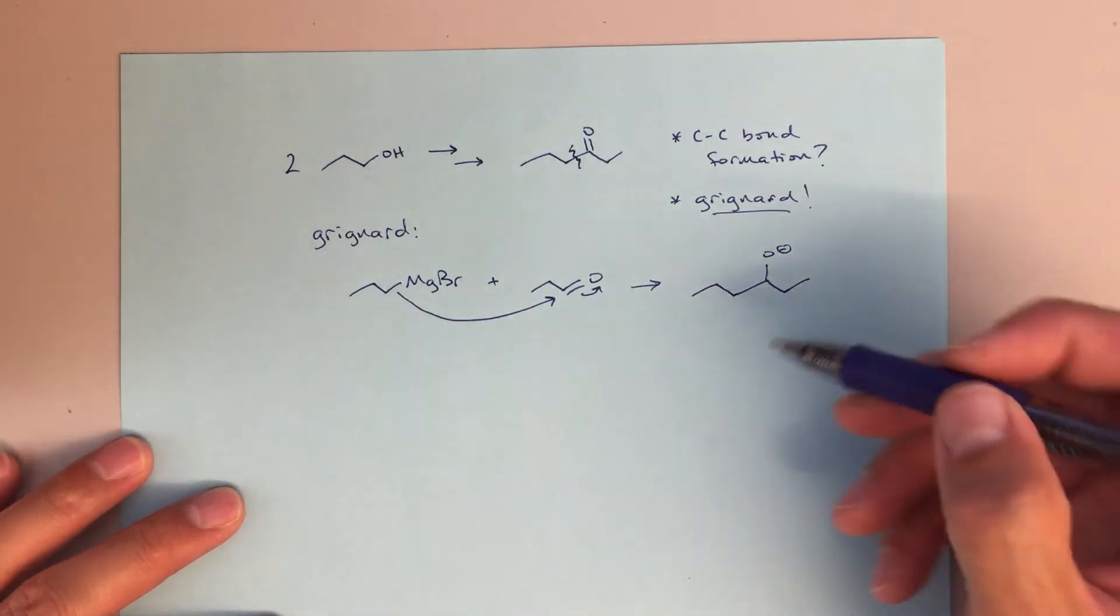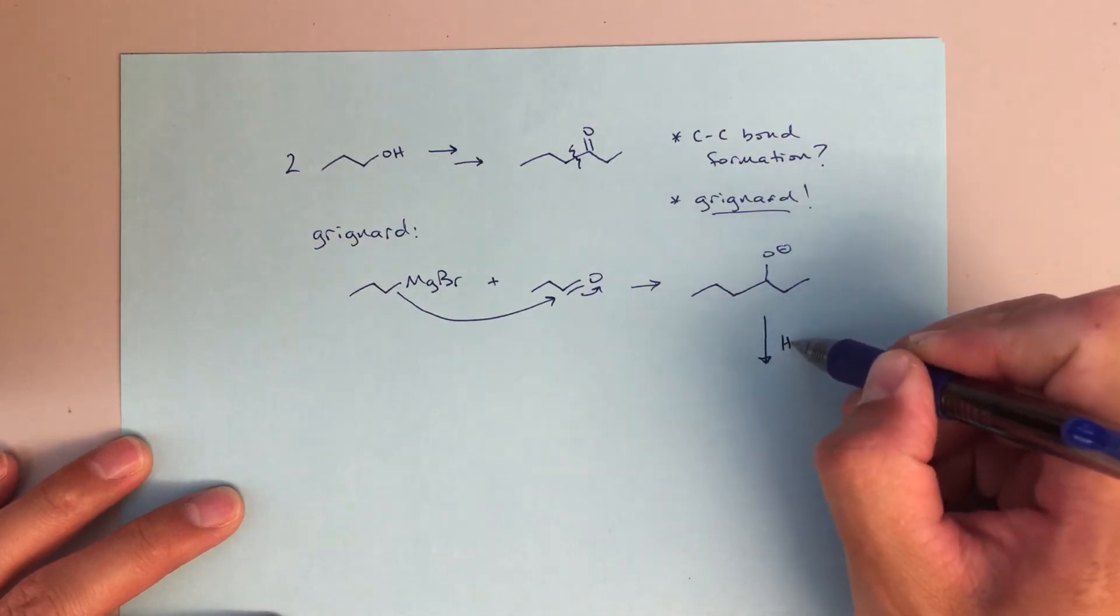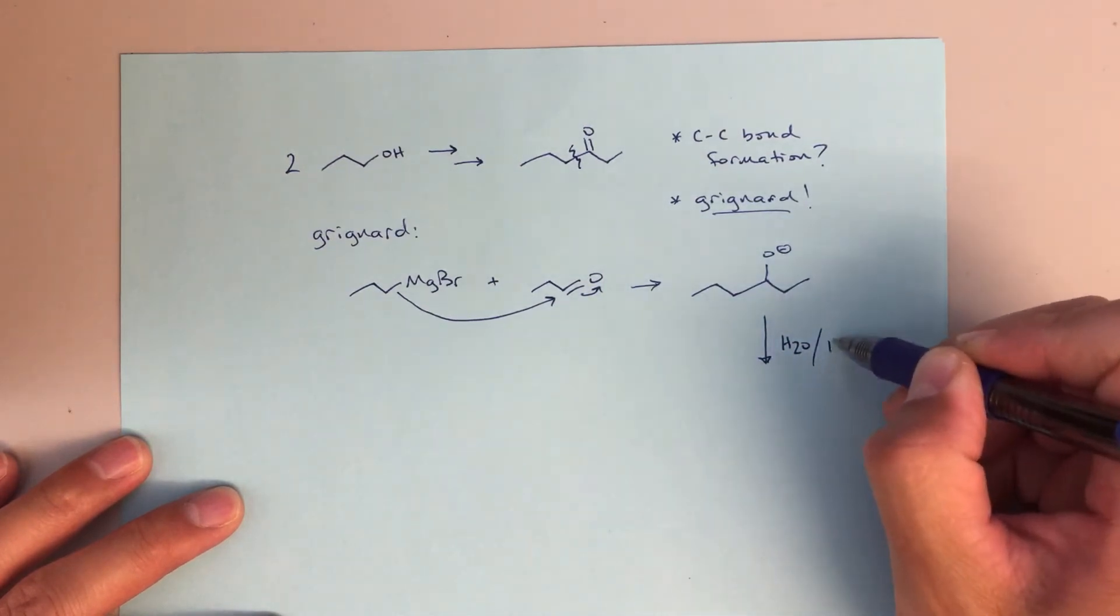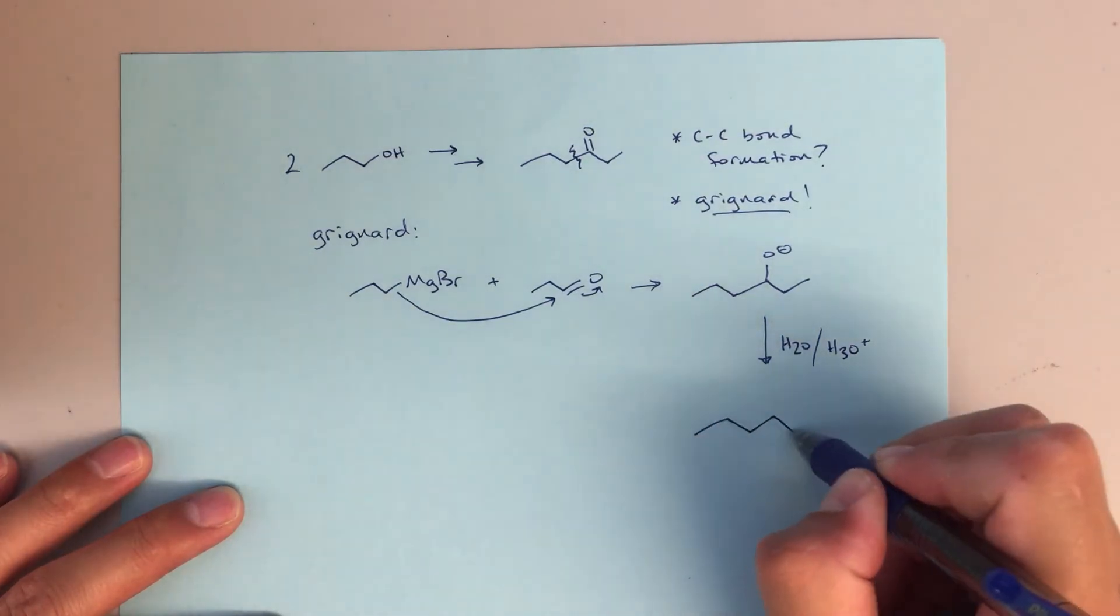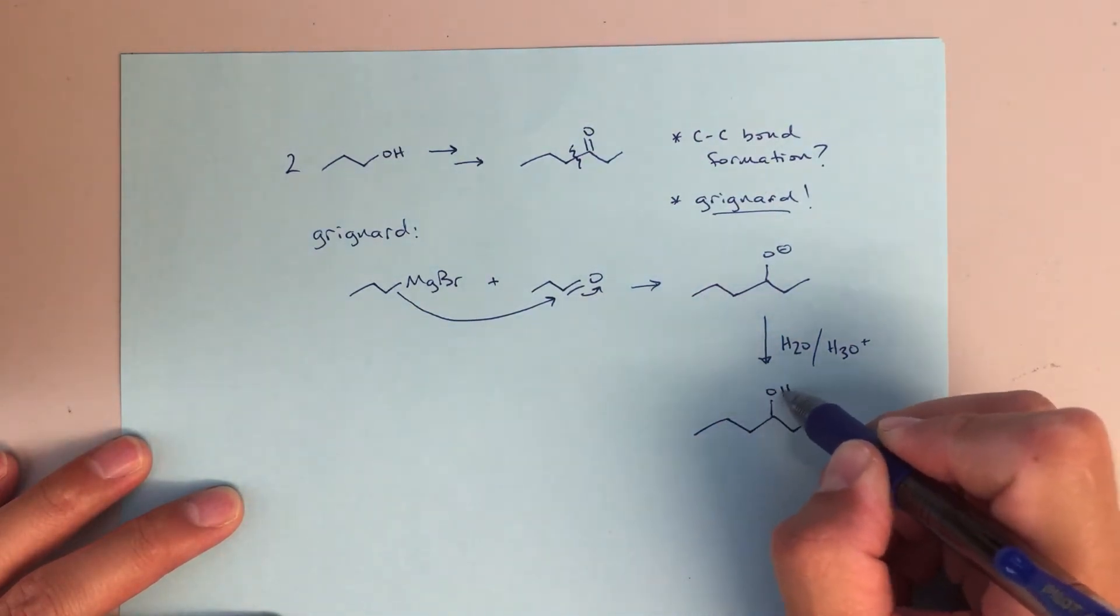Usually what we do in a Grignard is we would then protonate. So H2O, you could also use dilute acid, H3O+, but something that will protonate. So we get to an alcohol.